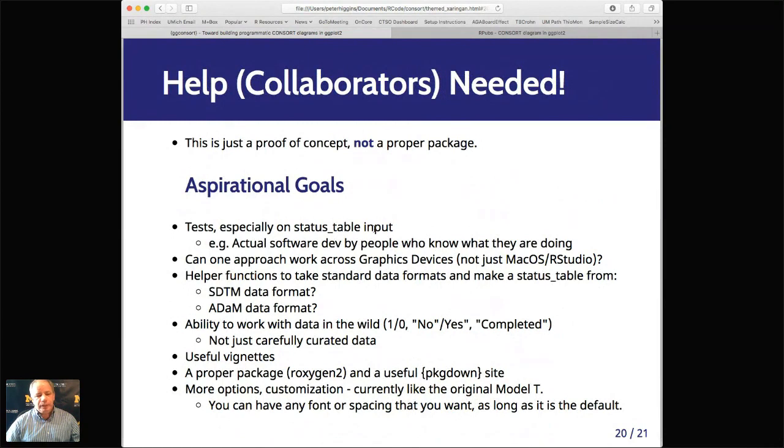It needs tests, especially on status table input. And you know, this is something which needs people who know what they're doing. So if folks are working in the chat, if you want to send out contact info, I would love to have more help. I'm not sure if I get it to work in a Mac OS and R Studio if it will work across all graphics devices. That's an area I haven't explored at all. I would love to add helper functions to take standard data format, like SDTM and ADaM to pull those and make those status tables. So then you can pipe them right into Draw Consort.